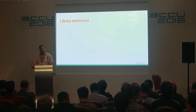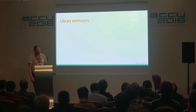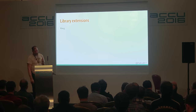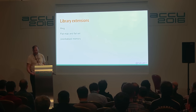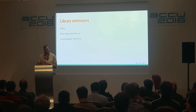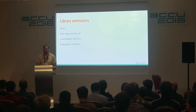Enough of that — containers and algorithms are the meat and potatoes of what we do. We've got plenty to say about extending the library. We have the ring, which is a circular buffer implementation; the flat map and flat set, which are cache-friendly implementations of map and set; uninitialized memory algorithms — there's already some support in the library but we have proposals to add more; and fixed point numbers, which are an alternative way of representing non-integer numbers with a uniform distribution of values.